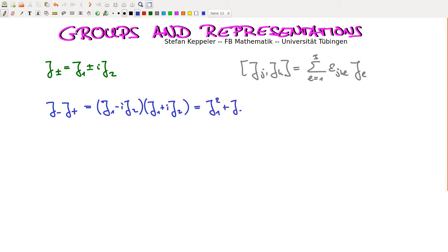j1 squared, we get j2 squared, and we also get, for example, from this one with this one, we get i times j1 j2, so plus ij1 j2. And then from here we get j2 j1 but with a minus i. So this here is really a commutator, and the commutator of j1 with j2, that's i times j3.